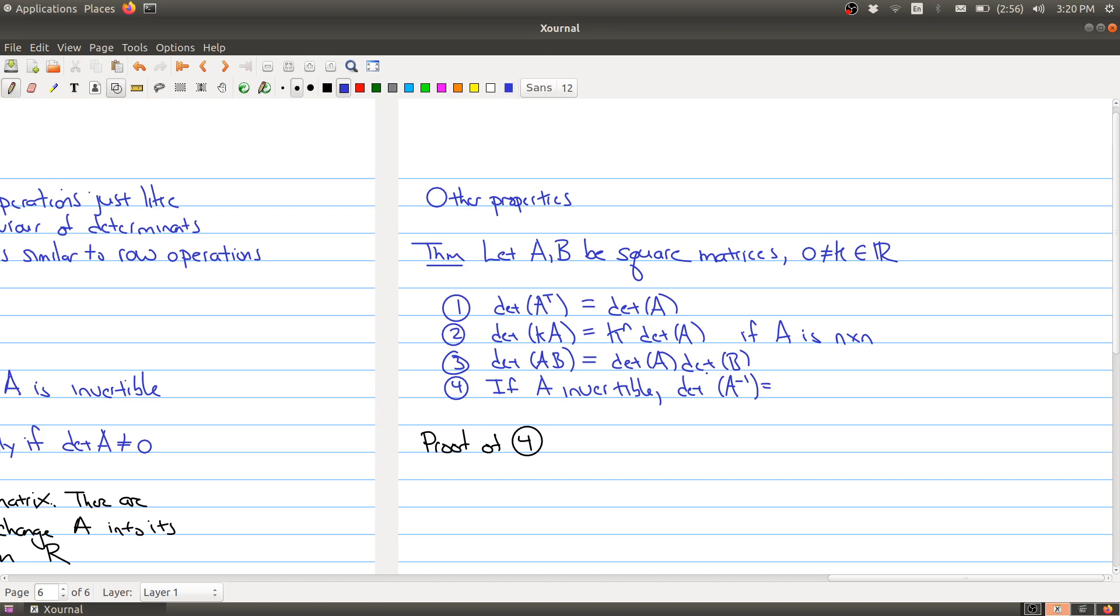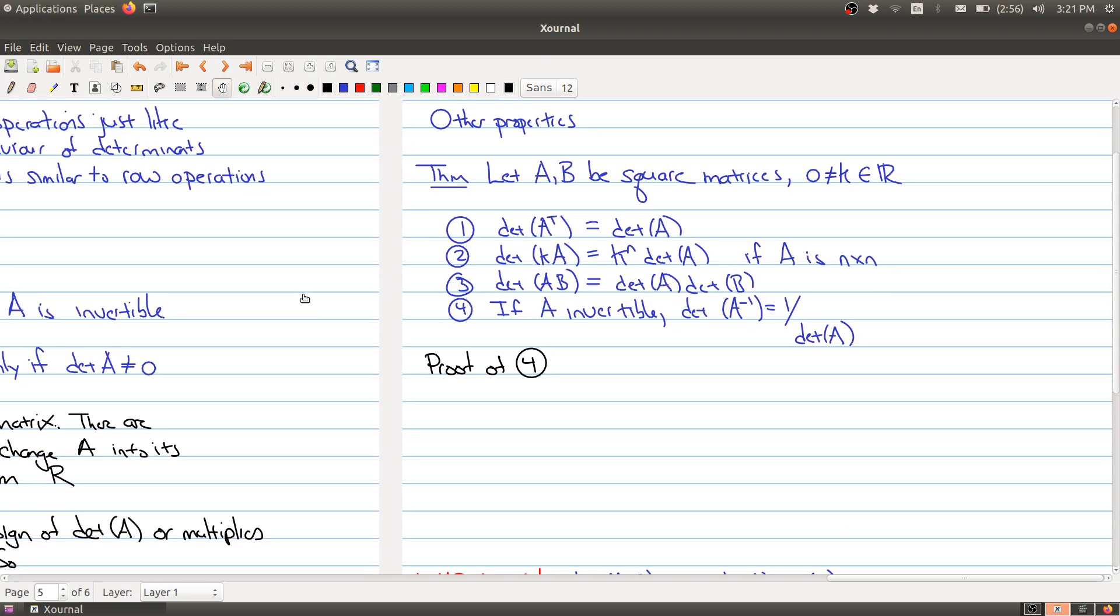The final one is if your matrix is invertible, the determinant of your inverse is 1 over the determinant of your original matrix. And since the proof of 4 is very straightforward, let me explain why it's true.